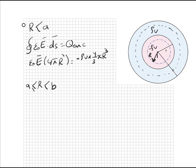راح يكون الـ Q سيرفس هنا نسقط بهاي المنطقة الثانية. نفس ما ذكرنا إنه الإبسلون في E في أربع باي R تربيع. راح نركز على Q نكلوز ضمن هالمنطقة. راح أشوف إنه الكرة الداخلية اللي مقدرها ناقص رو في في أربع على ثلاثة باي A تكعيب.